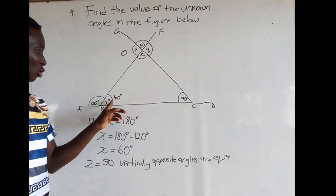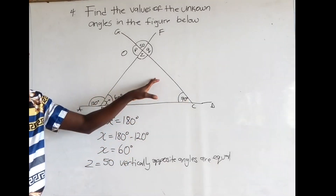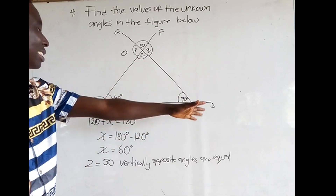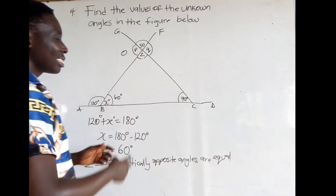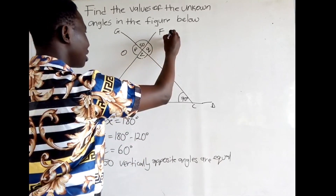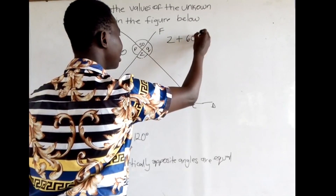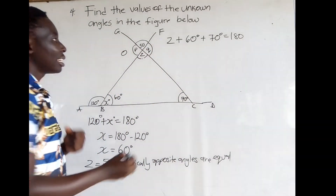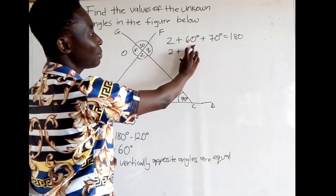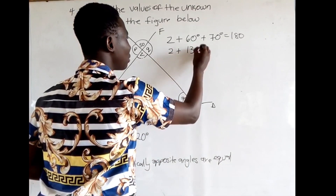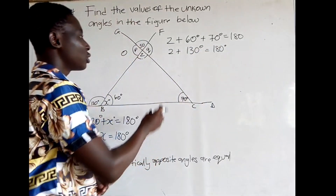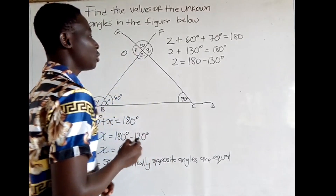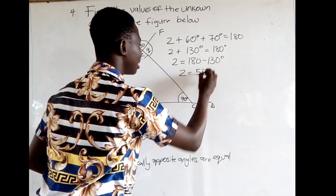We can also find z using the triangle property. Now that we know x is 60 and this angle is 70, we can use the property of a triangle which states that the sum of the interior angles of a triangle is equal to 180. So: z plus 60 degrees plus 70 degrees is equal to 180. 60 plus 70 gives 130, so z plus 130 is equal to 180. Making z the subject: z is equal to 180 minus 130, giving z is equal to 50 degrees — the same result.